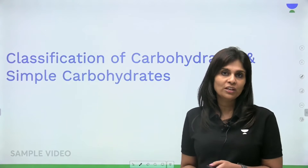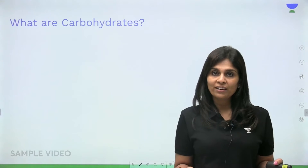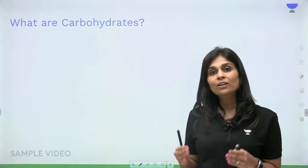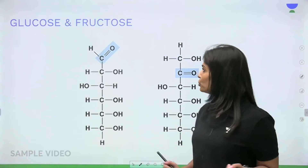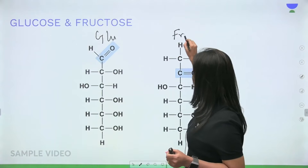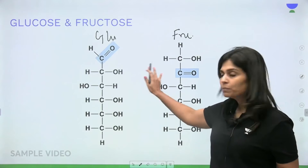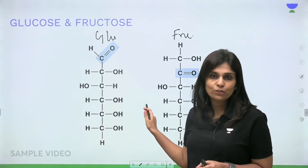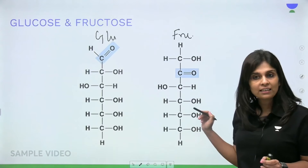Let's begin with the definition of carbohydrates. Instead of just telling you the definition for you to memorize, it will be easier to remember if you try to derive it yourself by looking at these two structures. I've shown you the structure of glucose on one hand and the structure of fructose on the other. You don't have to memorize these structures — just observe them and tell me one similarity and one difference between the two, other than both having six carbon atoms.